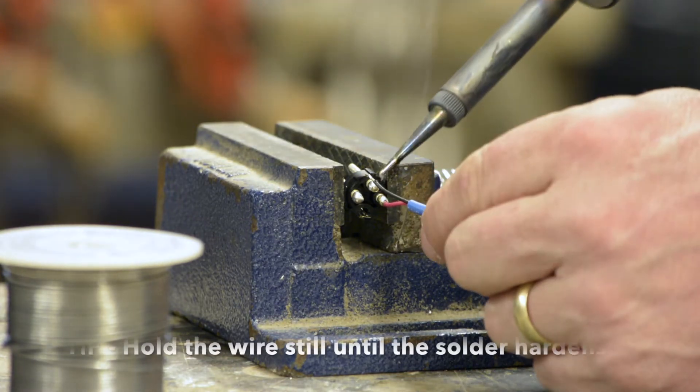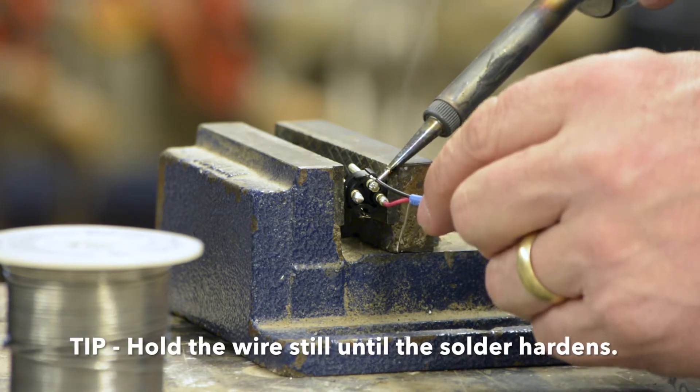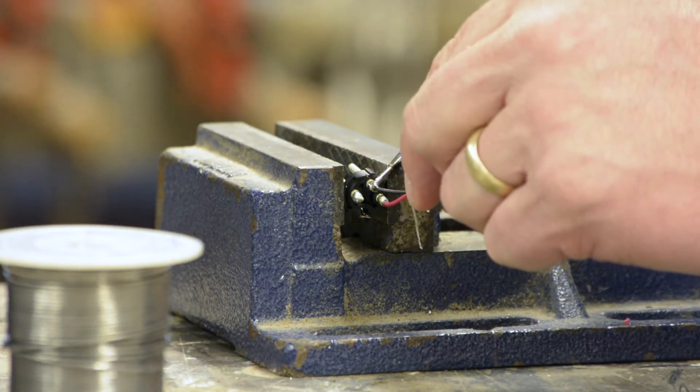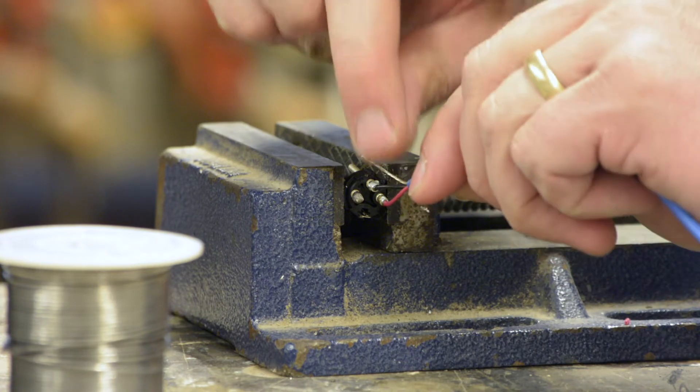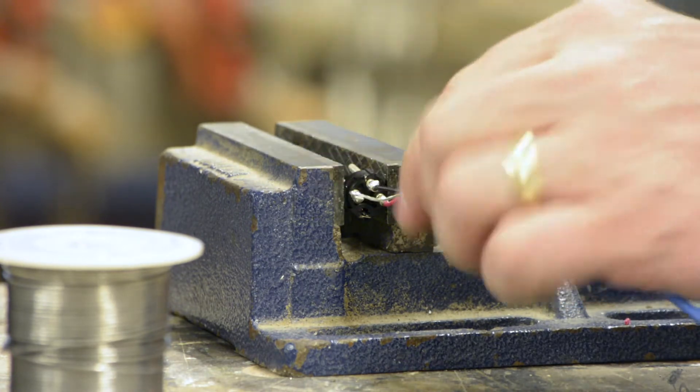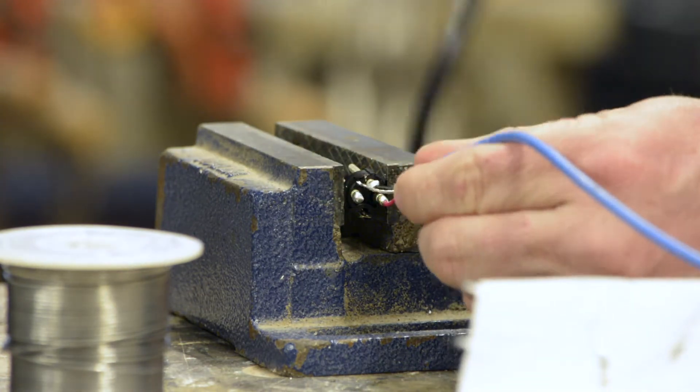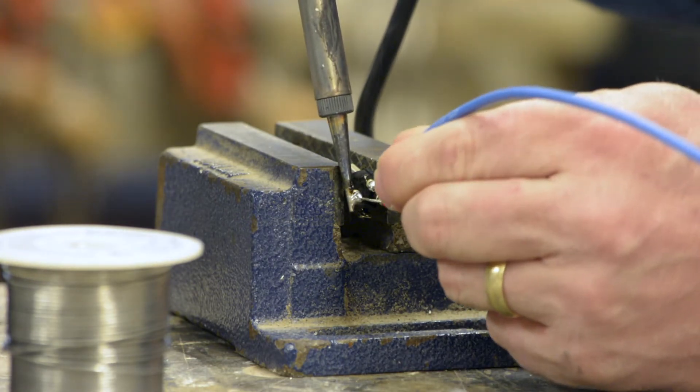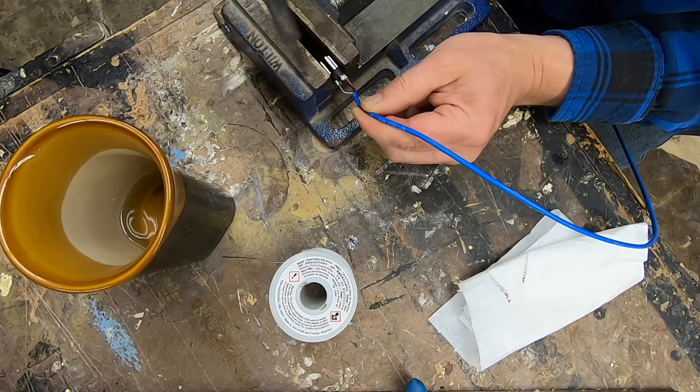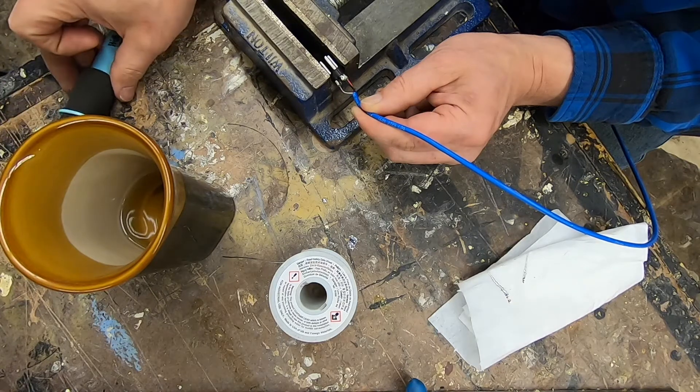And when I'm soldering this, I need to make sure that I'm not moving the wire around because I'll get a loose or a cold solder joint. Cold solder joint's not going to show its ugly face immediately, but down the road when oxidation starts to sit in, it will be a very hard problem to diagnose. That's it right there.